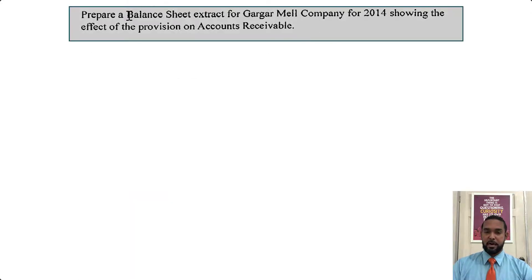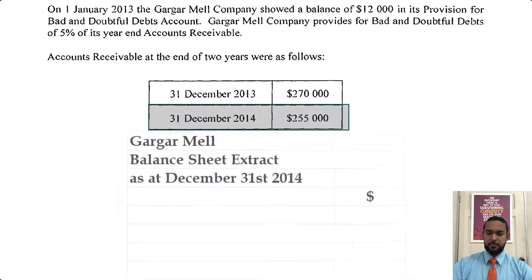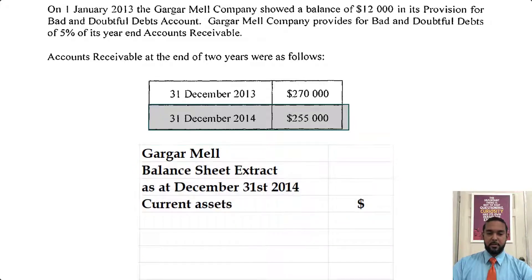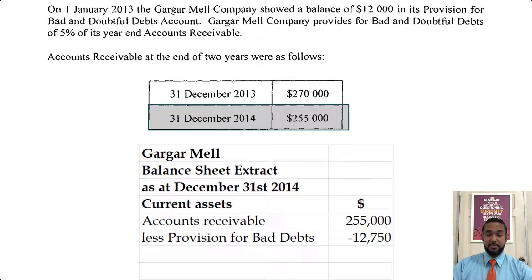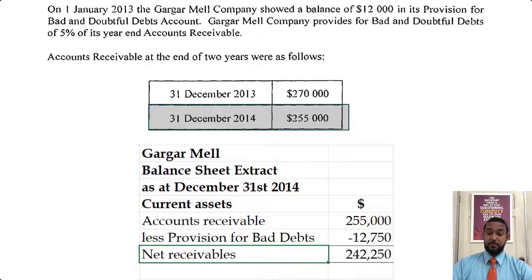They want us to prepare a balance sheet extract for Gargamel Company for 2014, showing the effect of the provision on accounts receivable. At the end of 2014, the accounts receivable balance was $255,000 and the provision balance we just found was $12,750. Don't forget to head up properly — Gargamel balance sheet extract as of December 31st, 2014. You're going to put accounts receivable $255,000 minus the $12,750, and that's going to give us $242,250. That figure is the net receivables — or net debtors, if you prefer that.